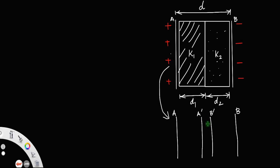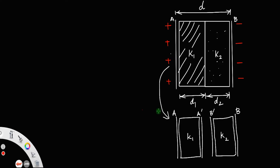The distance between a-dash and b-dash is negligible — there is no distance between them. The space between a and a-dash is filled with k1, and the space between b-dash and b is filled with k2. This side is positively charged so plate a-dash becomes negatively charged. By induction, plate b-dash becomes positive and plate b is negatively charged. From this arrangement it is clear that these two capacitors are in series, because the charge remains the same on both capacitors.